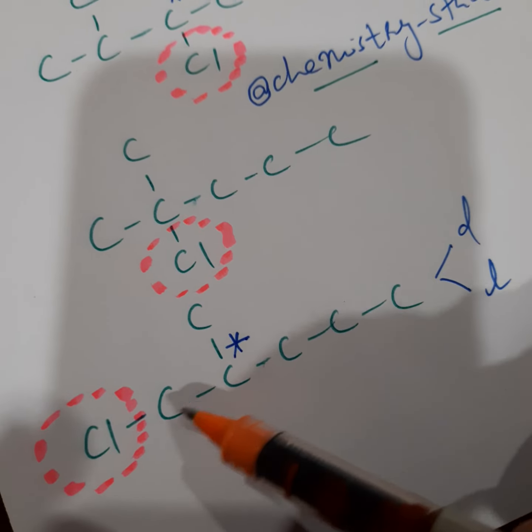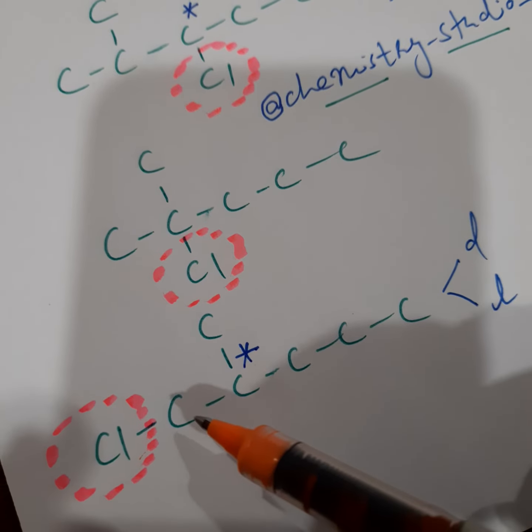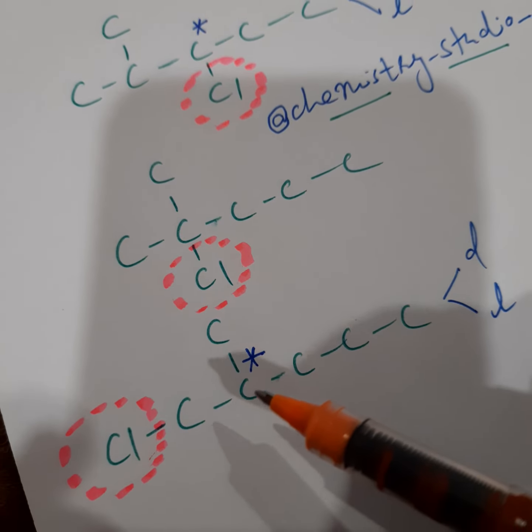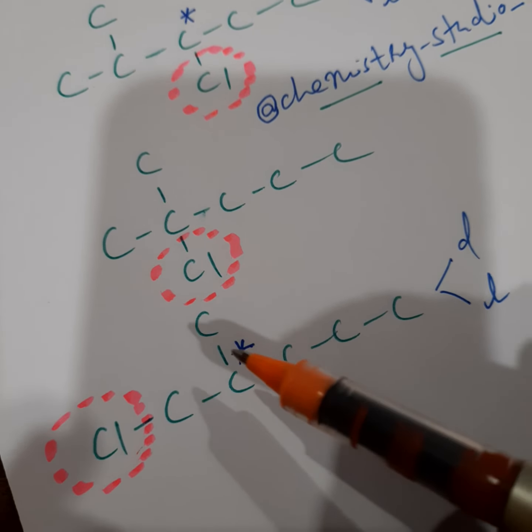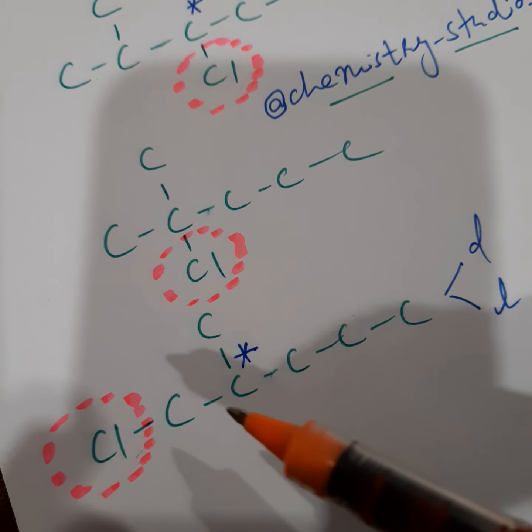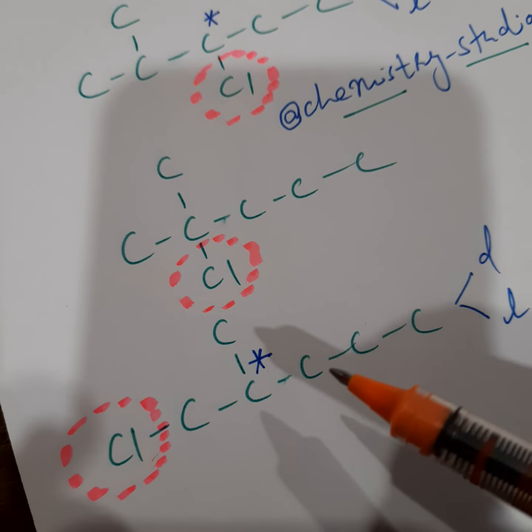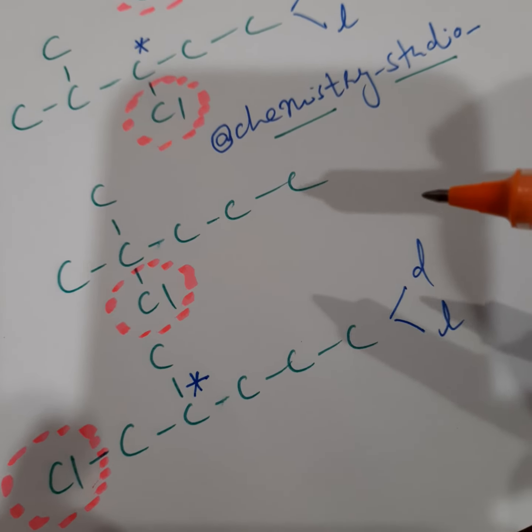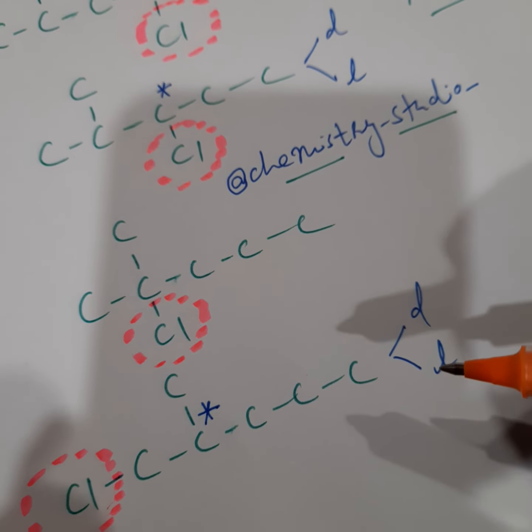Now this is very interesting. The chlorine is attached to this carbon but this is not chiral. Now this carbon has become chiral because this is CH3 and this is CH2Cl. These two groups are different from each other. Already it is having one hydrogen atom and one n-propyl group. So again a case of dextrorotatory and levorotatory.